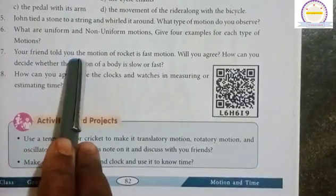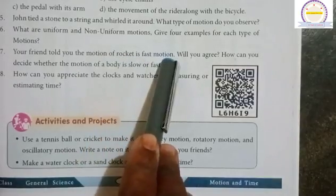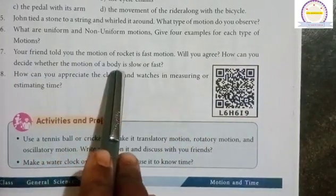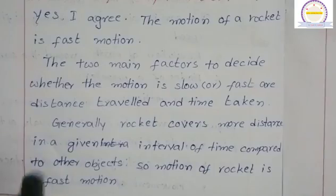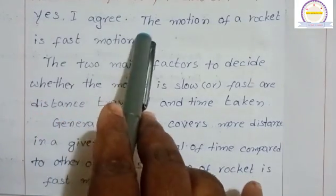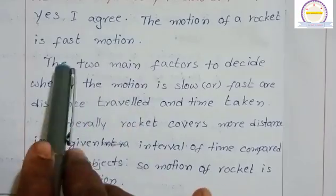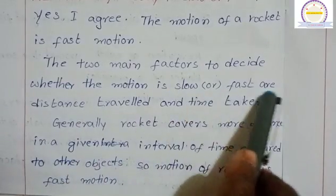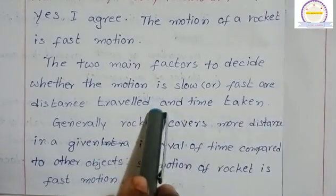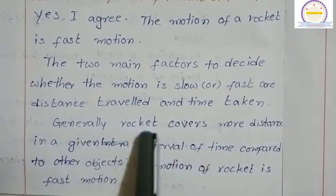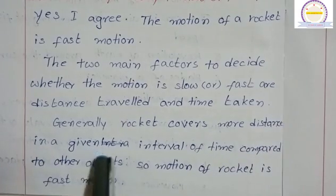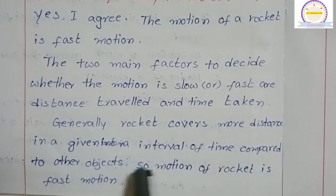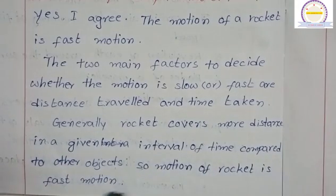Seventh question: Your friend told you the motion of a rocket is fast motion. Will you agree? How can you decide whether the motion of a body is slow or fast? Yes, I agree. The motion of a rocket is fast motion. The two main factors to decide whether the motion is slow or fast are distance traveled and time taken. Generally, a rocket covers more distance in a given interval of time compared to other objects. So motion of rocket is fast motion.